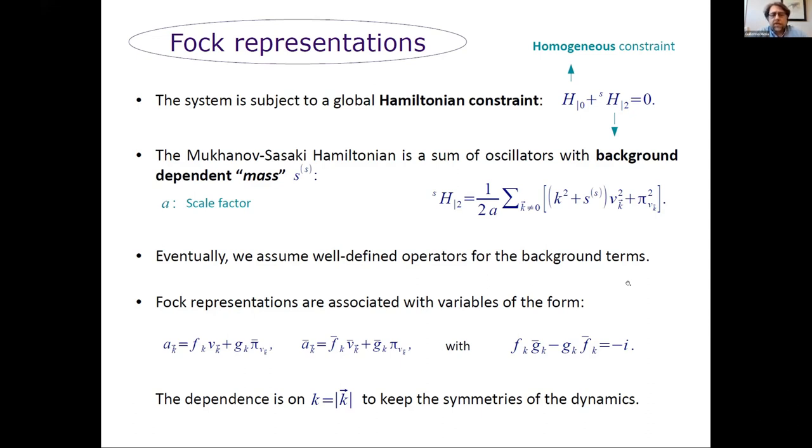Assume that eventually we will have a good operator representation for all the background functions that appear in our discussion in our constraint. And let's focus on the perturbations. We can define annihilation and creation variables just by forming linear combinations of the configuration and momentum variables for the Mukhanov-Sasaki field. In doing so, I will just focus on combinations that respect the decoupling of the modes and furthermore the symmetries of the dynamics that depends only on the wave norm and not on the particular wave vector of the Fourier mode. The linear combinations I will describe by two coefficients, f and g, and they have to be normalized in order that our variables are in fact of annihilation and creation type.